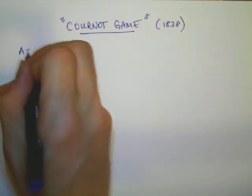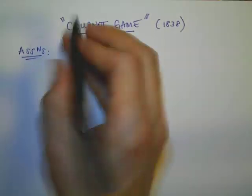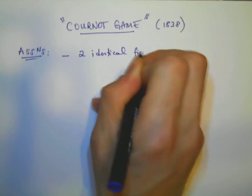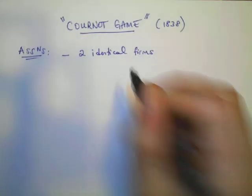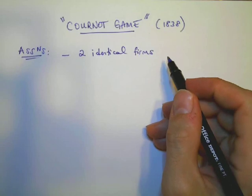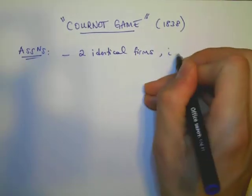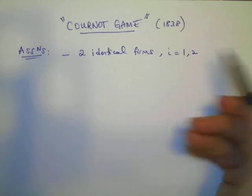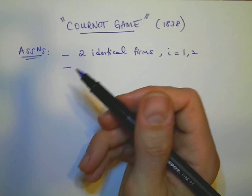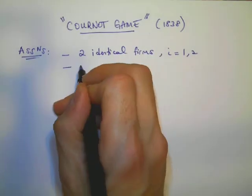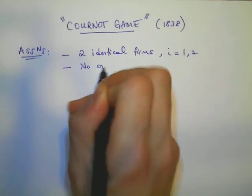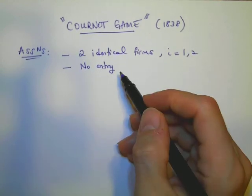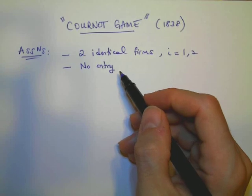Cournot made the following assumptions in his game. He assumed two identical firms, meaning that these firms produce the same output by using the same cost and production technologies. And let's call them I, where I is equal to 1 or 2, so we have firm 1 and firm 2. Number 2, he also assumed that this market should be closed to entry, so there is no entry, making this market an oligopoly market effectively.